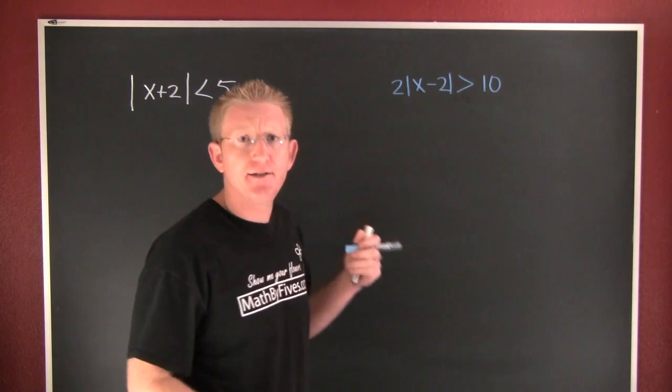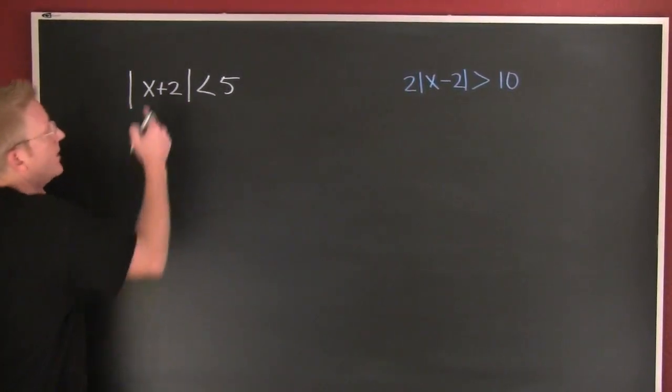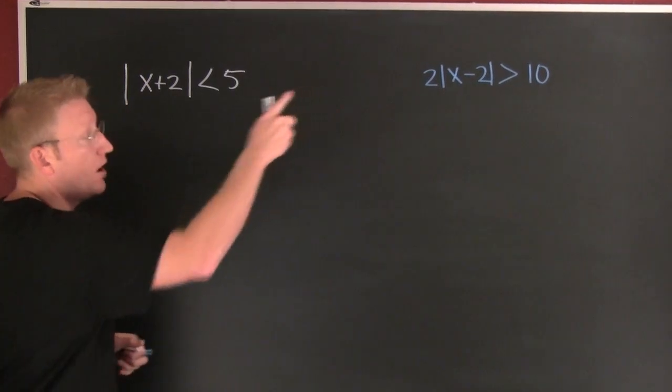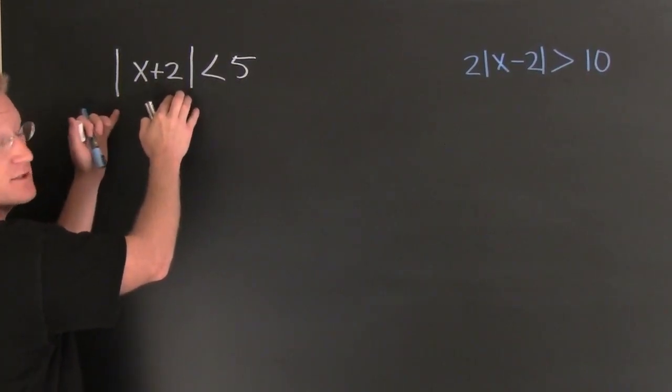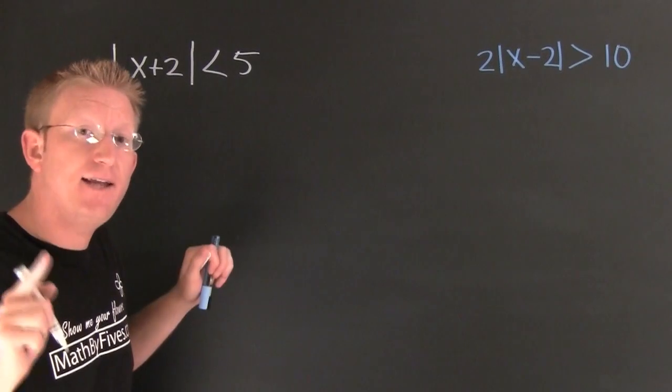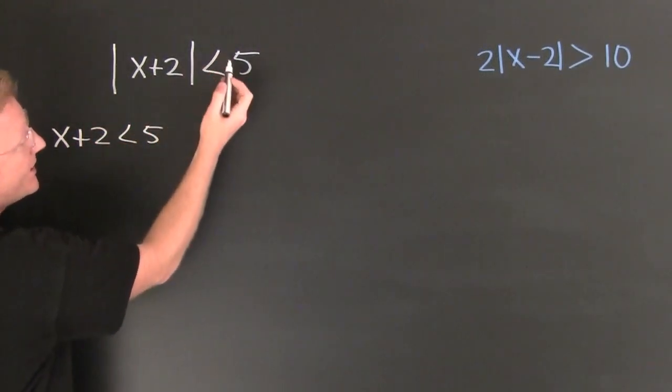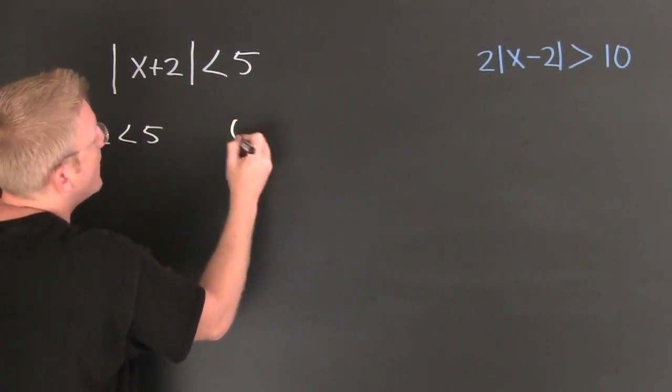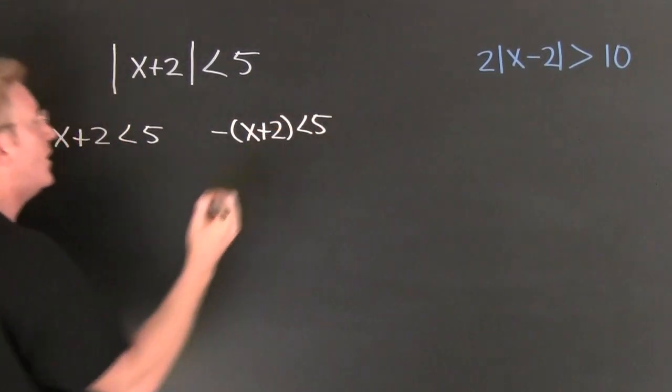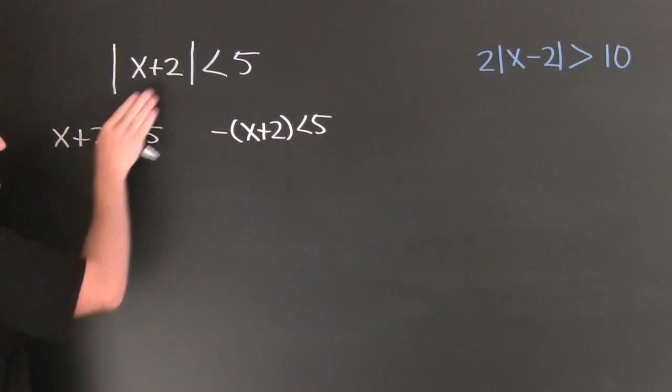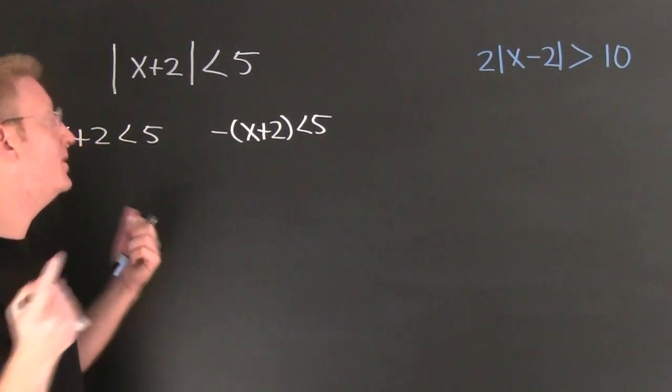I'm going to solve this white one first. This is going to break up into two cases because the stuff on the inside, whether it's positive or negative, after we take the absolute value it needs to be smaller than 5. First where the stuff inside is positive: x plus 2 is smaller than 5. Or the opposite of this: negative x plus 2 is smaller than 5. The stuff inside can be positive or negative and the absolute value takes care of that.